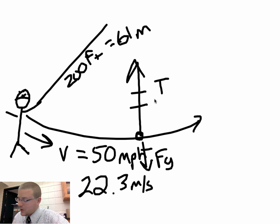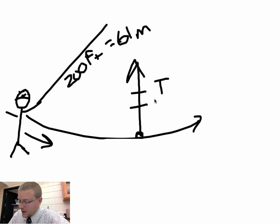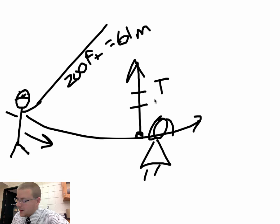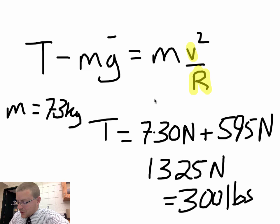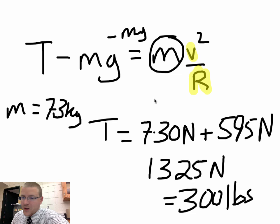However, Spider-Man usually catches the damsel in distress at the bottom of the circle. Not only would he have to hold up his own weight, he'd also have to hold up the victim at the same time. So you'd add an extra mg for the person he catches, and the total mass accelerating would be both masses combined — meaning the web must pull up far more than just 300 pounds.